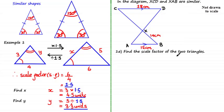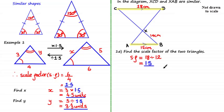Let's have a look at the next question. In the diagram, XCD and XAB are similar triangles — find the scale factor. We've already been told they're similar, so we don't need to check this by looking at the angles inside the shapes. As both triangles are similar, there is a scale factor we can use as a multiplier to get from one length to a similar length on the other shape. To calculate the scale factor of length for these two triangles, we compare similar sides. We do 18 divided by 12, which equals a scale factor of 1.5.